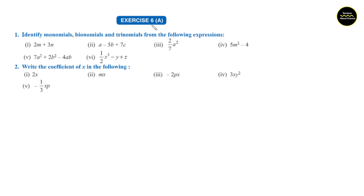Let us solve exercise 6a, section number 1: identify monomials, binomials, and trinomials from the following expressions. In the lecture part we have already seen that a monomial is an expression consisting of one term, a binomial is an expression consisting of two terms, and a trinomial has three terms. So in all these following questions, we will just look at how many terms each expression has, and that will give us the answer.